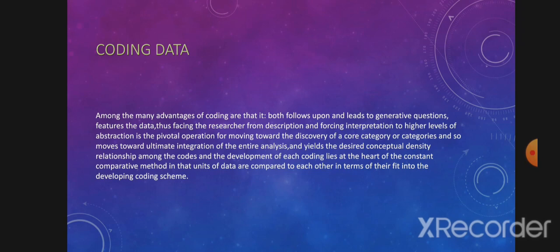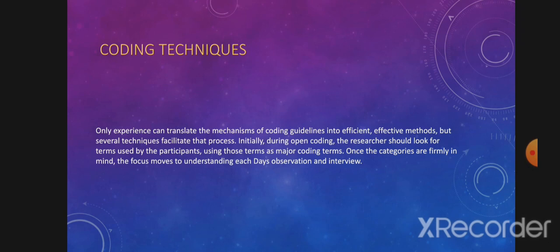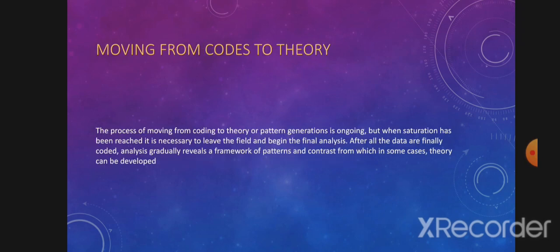Coding Data. At the heart of the constant comparative method, units of data are compared to each other in terms of their fit into the developing coding scheme. Initially, during open coding, the researcher should look for terms used by the participants, using those terms as major coding terms. Once the categories are firmly in mind, the focus moves to understanding each day's observation and interview. The process of moving from coding to theory or pattern generation is ongoing, but when saturation has been reached, it is necessary to leave the field and begin the final analysis after all the data are coded.